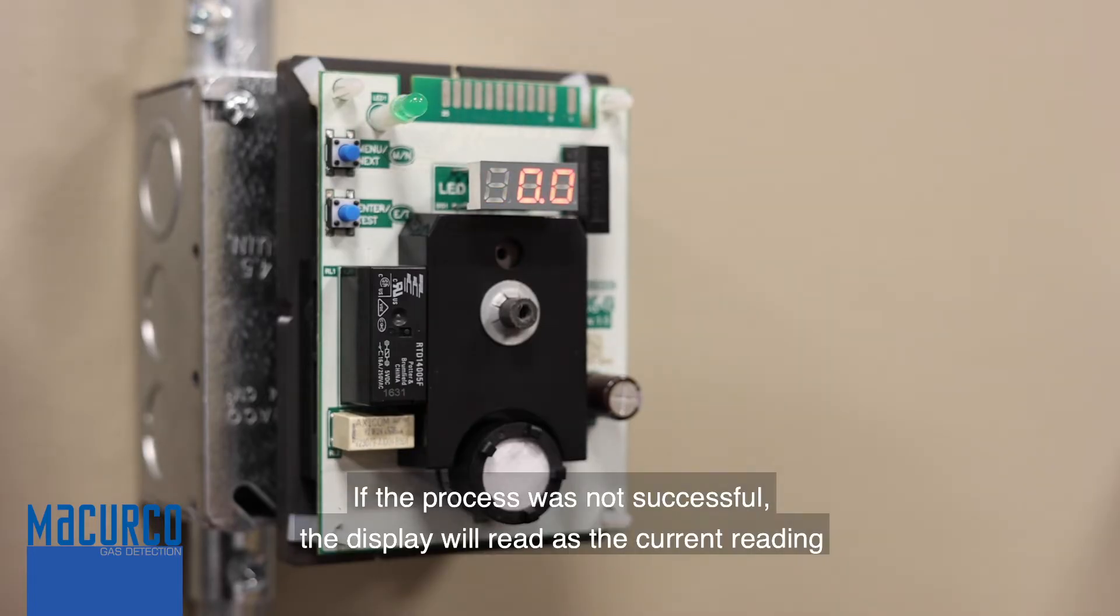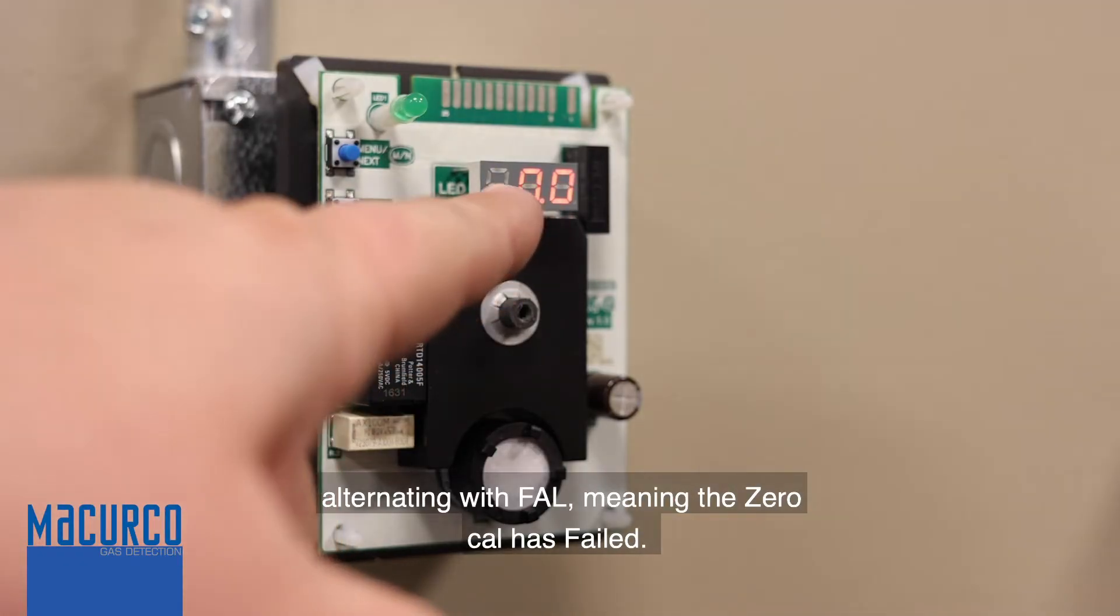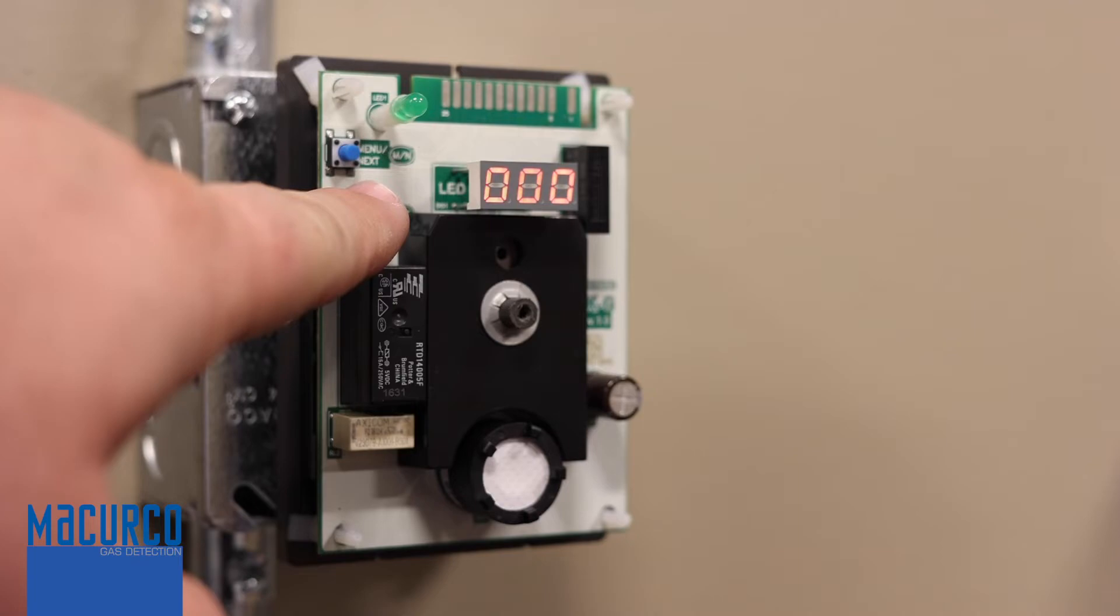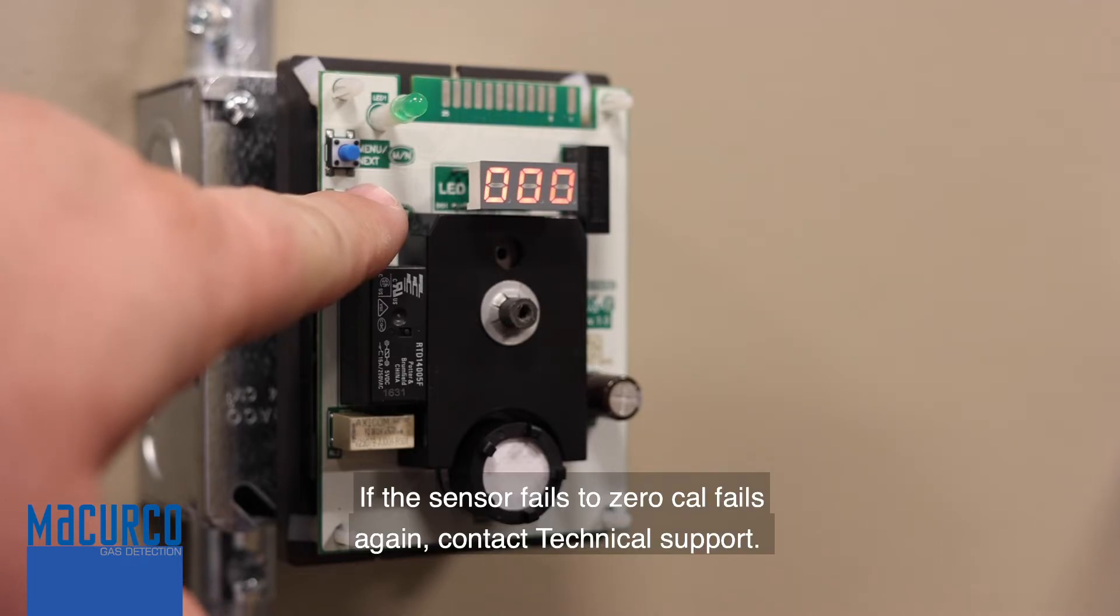If the process was not successful, the display will read as the current reading alternating with full zero cal, meaning the zero cal has failed. If this occurs, repeat the steps. If the sensor fails to zero cal again, contact technical support.